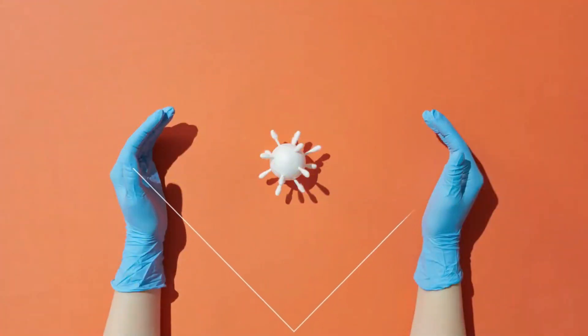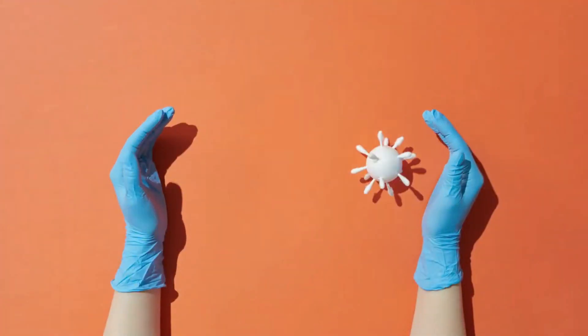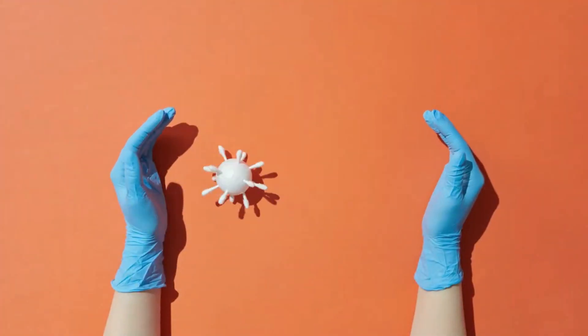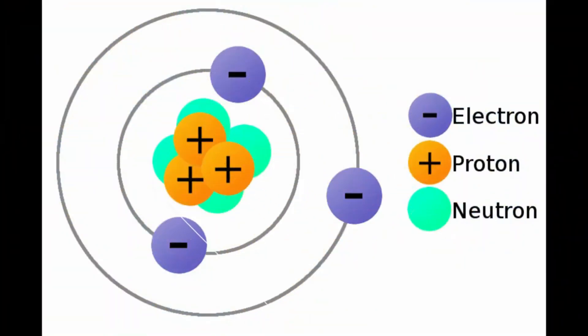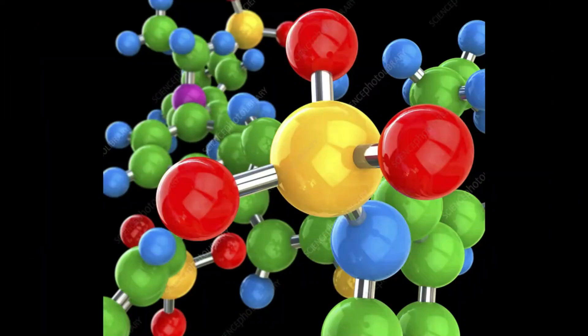Atoms are very tiny and minuscule, invisible particles — the smallest physical material. When more atoms combine, they become molecules.